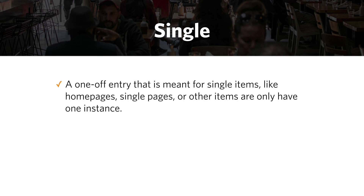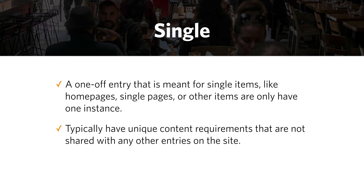The third type is a single. A single is a one-off entry meant for single items, like homepages or single pages that stand on their own, and they only have one instance. The interesting thing about singles is that they have unique content requirements that aren't shared with any other entries on the site. Because of that, when you define a single, you also define a specific template that the single is tied to. Whereas with a channel or structure section, you define one template used for all entries. With a single, you can specifically say use this template because this is something special, like a homepage.